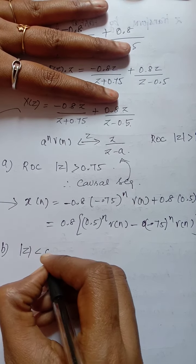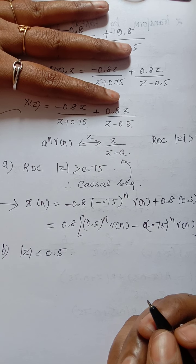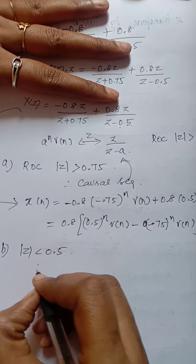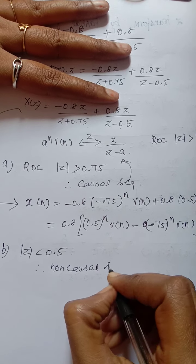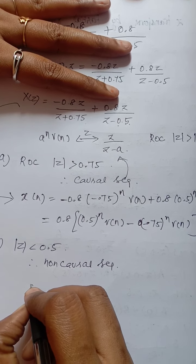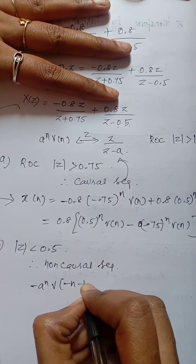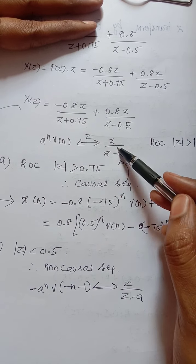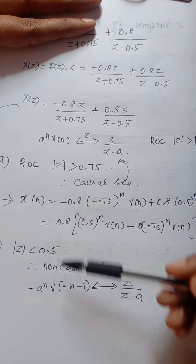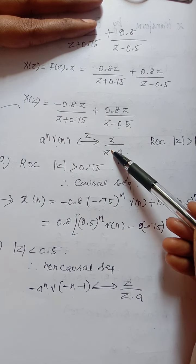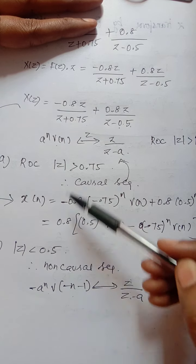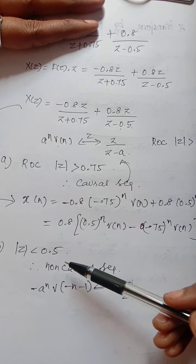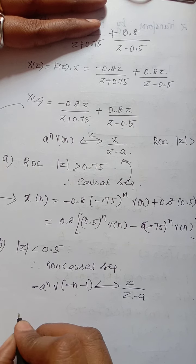The second ROC condition is |z| < 0.5, which is interior to the smallest pole value z = 0.5. This gives a non-causal sequence. For a non-causal sequence, we use the formula: −aⁿu(−n − 1) has Z-transform z/(z − a).